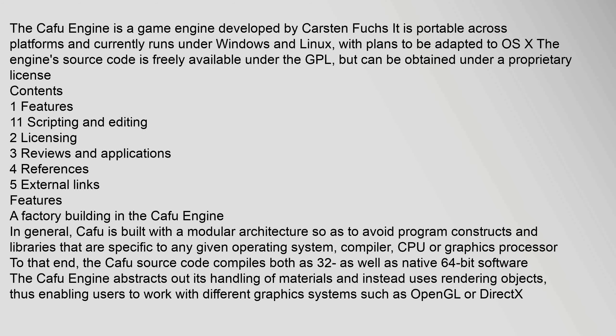In general, CAFU is built with a modular architecture so as to avoid program constructs and libraries that are specific to any given operating system, compiler, CPU, or graphics processor. To that end, the CAFU source code compiles both as 32-bit as well as native 64-bit software. The CAFU engine abstracts out its handling of materials and instead uses rendering objects, thus enabling users to work with different graphics systems such as OpenGL or DirectX.